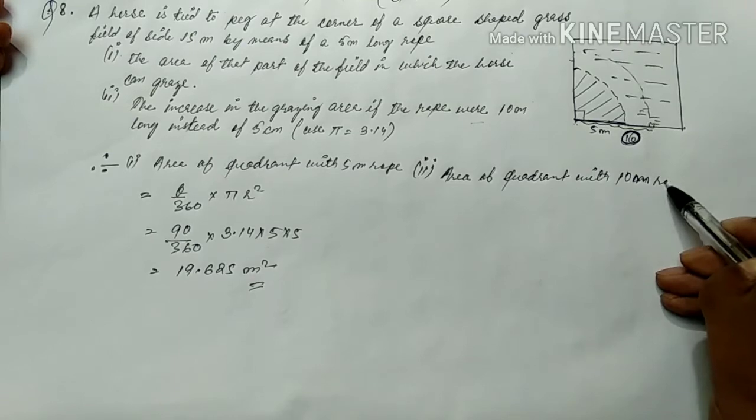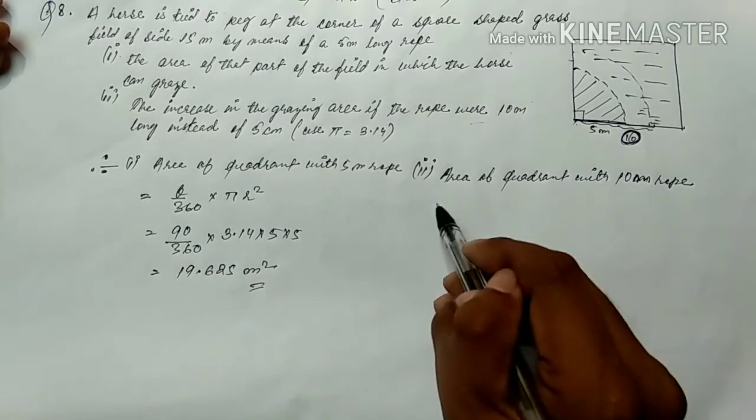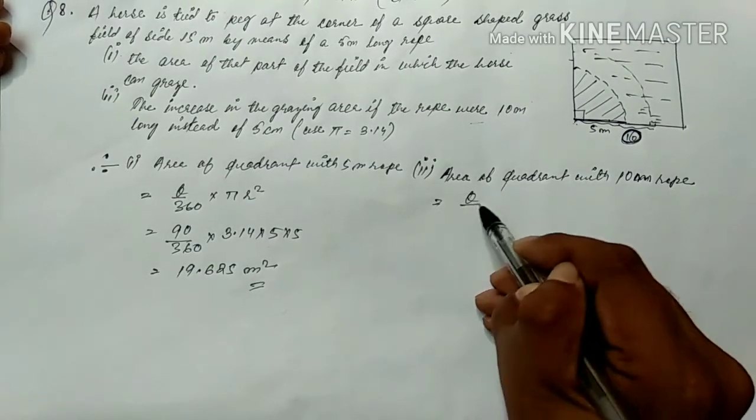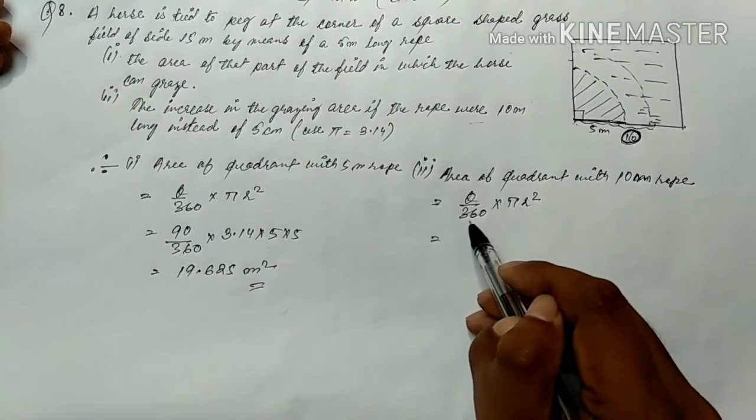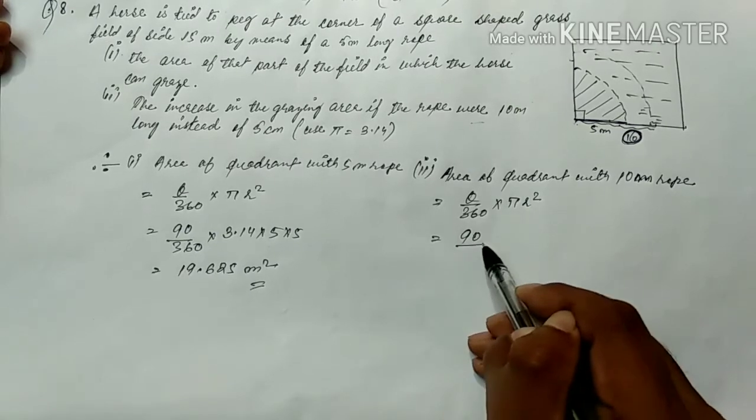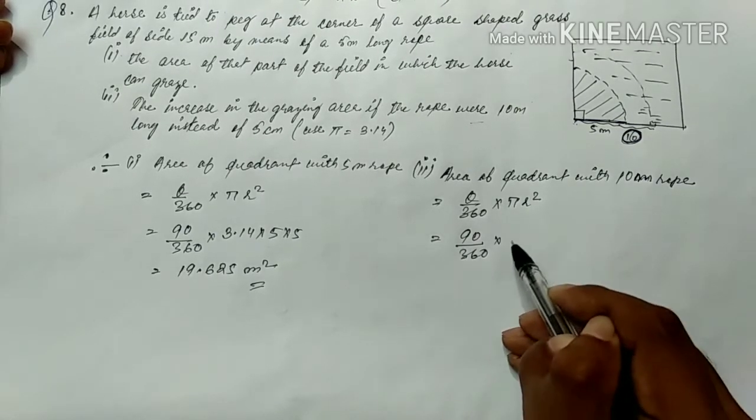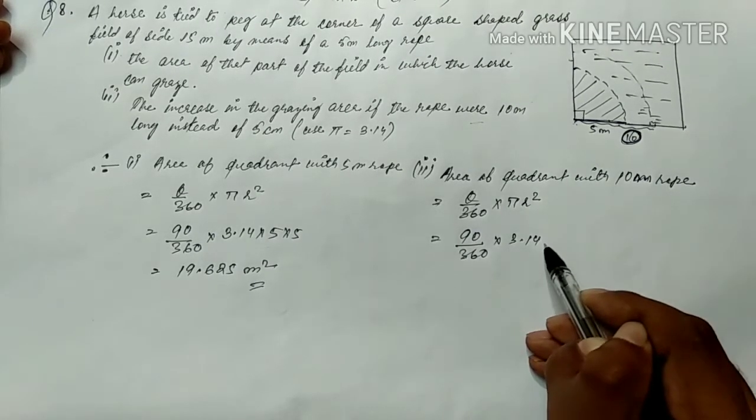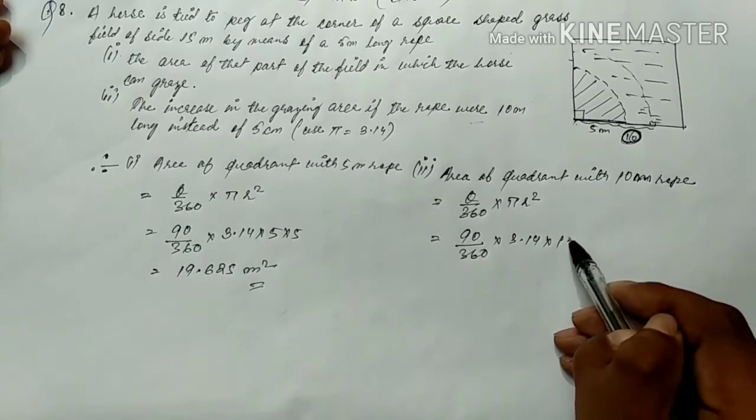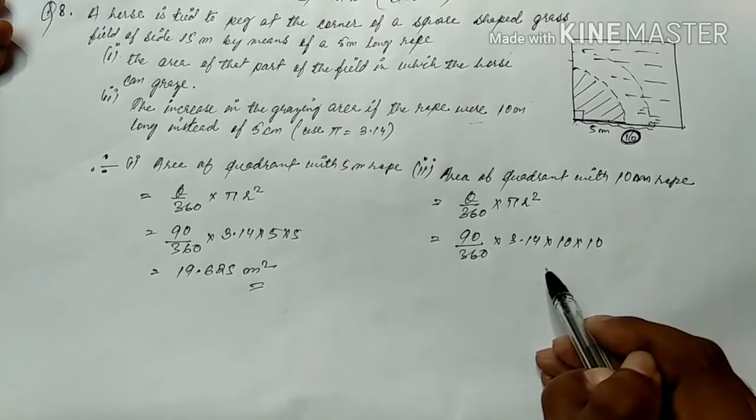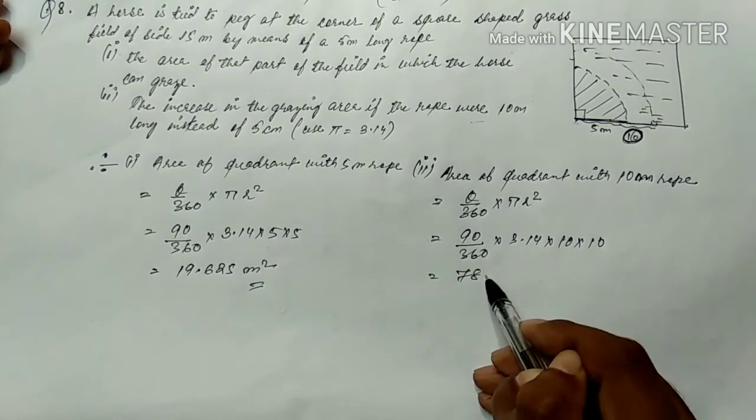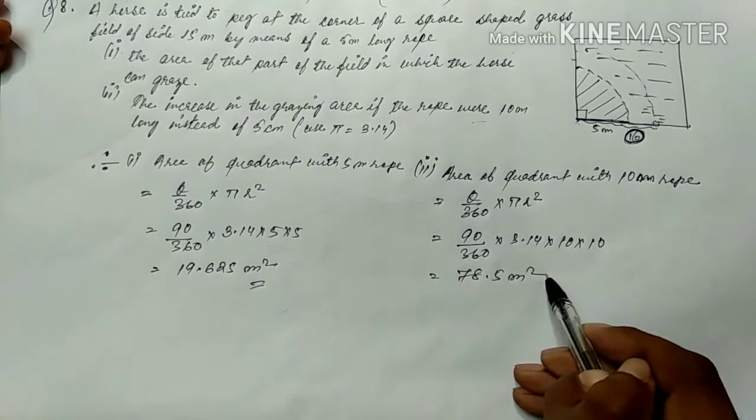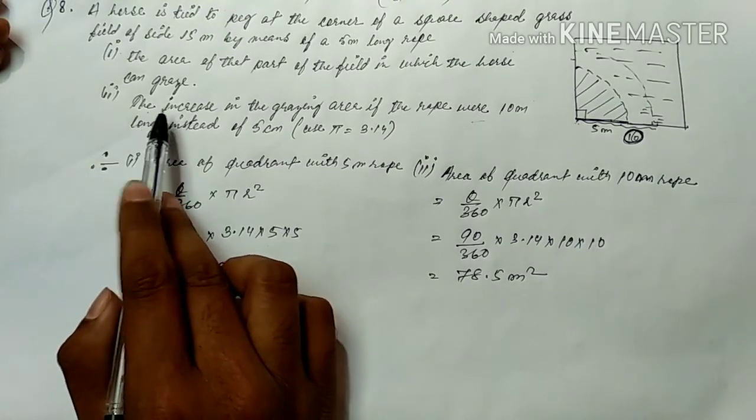Now the formula is theta by 360 into pi r square. Now the theta is the same, 90 by 360 into pi 3.14. The value is 10 into 10. This is our answer, 78.5 m squared.